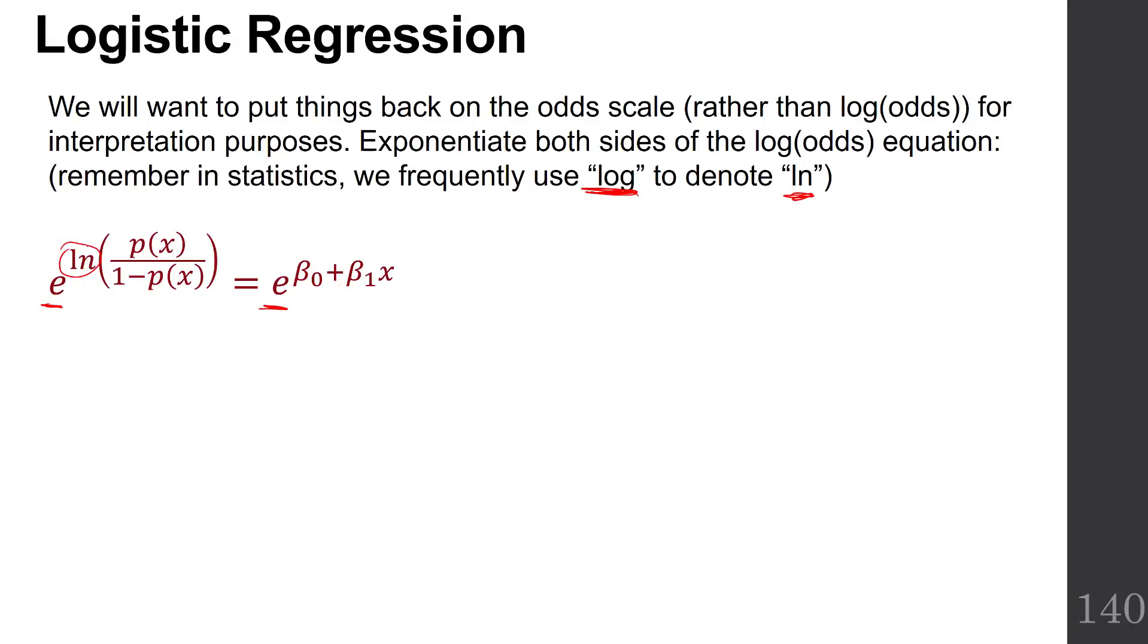That's the only thing we've done, because we're trying to undo this odds here. If we do e to that, it gets rid of the odds. We're left with just the odds on the left and e raised to the beta naught plus beta 1x power on the right.